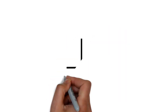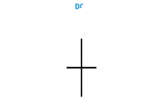The first one is Doji. In this candle, opening and closing are at the same level, so there is no body. The lower level is the lowest point and the upper level is the highest point. Doji indicates a neutral signal — bulls and bears are equal. We also call it indecisive, meaning no decision has been made.